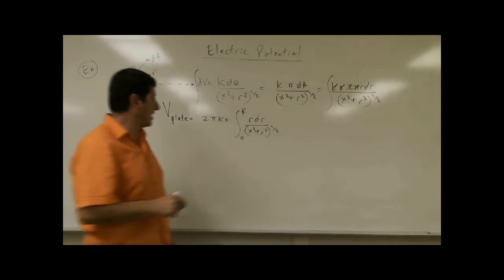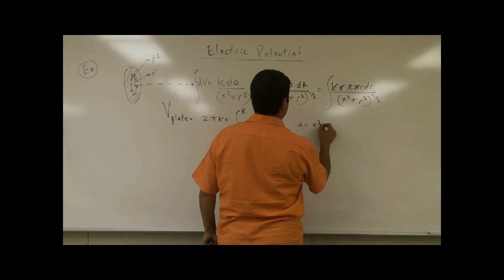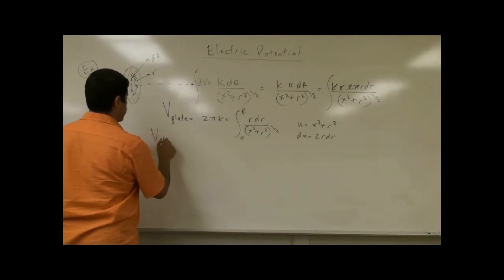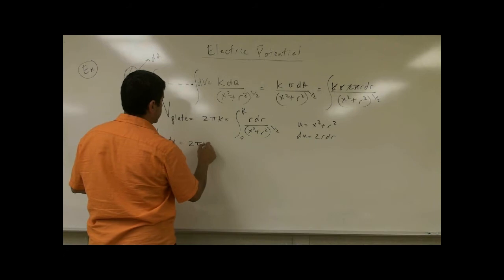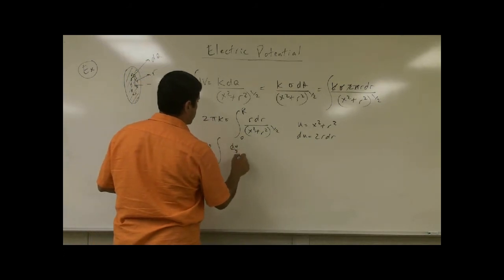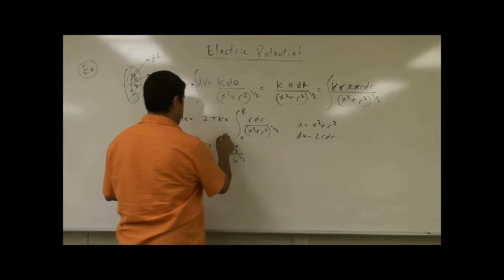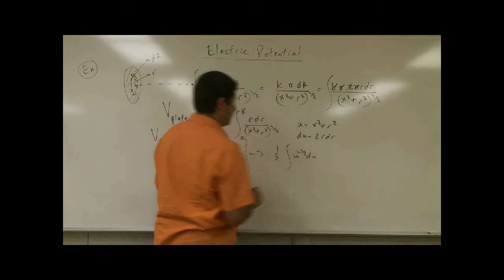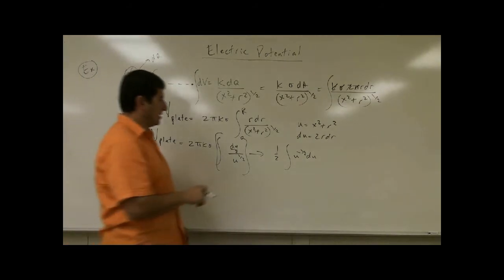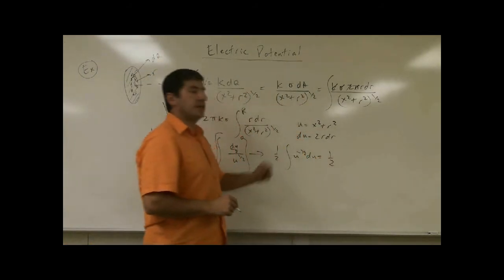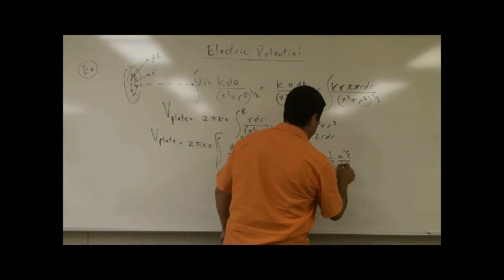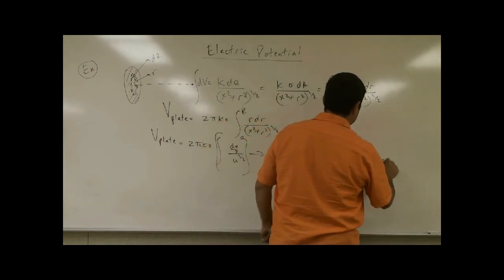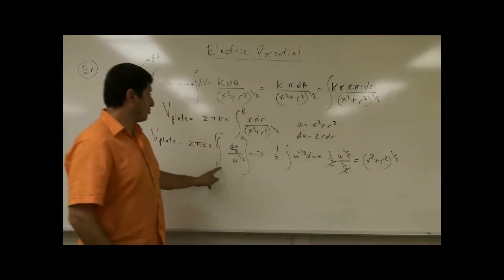Then I do a u substitution. u is equal to x squared plus r squared, du is equal to 2r dr. The plate potential becomes 2 pi k sigma times du over 2, divided by u to the one-half. Focusing on the integral, this is one-half times the integral of u to the minus one-half du. The integral of that is one-half times u to the one-half over one-half, and the twos cancel. So the integral comes out to be the square root of x squared plus r squared, evaluated from 0 to R.